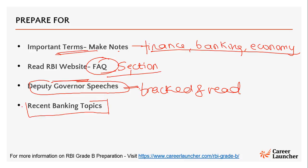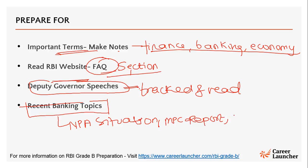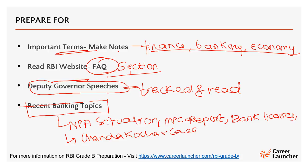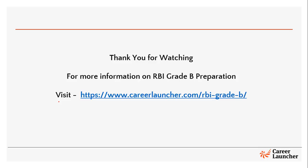Lastly, the most important thing is staying updated on recent banking topics — things like the NPA situation, reading the MPC Committee report which comes out after every monetary policy, reading about various bank license cases, and cases like the Chanda Kochar case. You need to be thoroughly updated with recent topics in the banking industry. This is the broader framework for what you need to prepare when it comes to the General Awareness section in your Grade B examination. Thank you for watching.